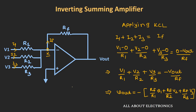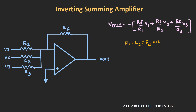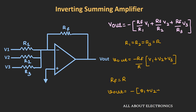We know that for a single input to an inverting op-amp, Vout = −(RF/R1)·Vin. Here, instead of a single input, we have multiple inputs, so the output is the algebraic sum of individual responses. If R1 = R2 = R3 = R, then Vout = −(RF/R)·(V1 + V2 + V3). And if RF = R, then Vout = −(V1 + V2 + V3).